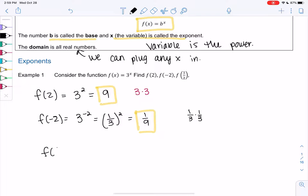And what do fraction powers do? So f of 1 half is 3 to the 1 half. Fraction powers are roots. A 1 half power is a square root, so we get the square root of 3.